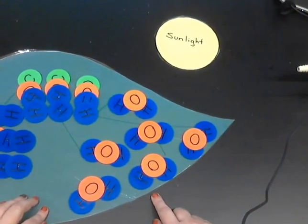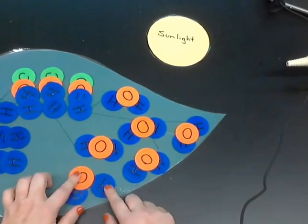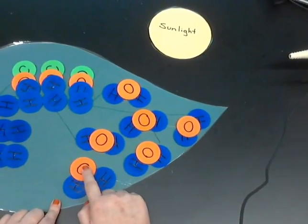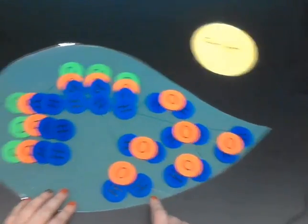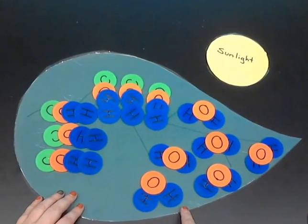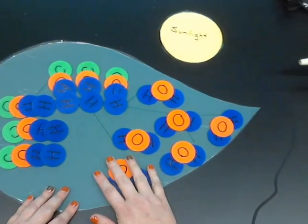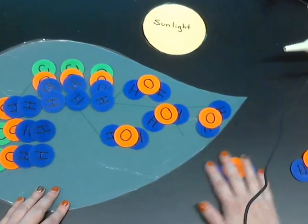When this pairing happens, what molecule has been created? This is the fifth part of the formula, Y. These molecules leave the leaf through the stromata. This process is called...